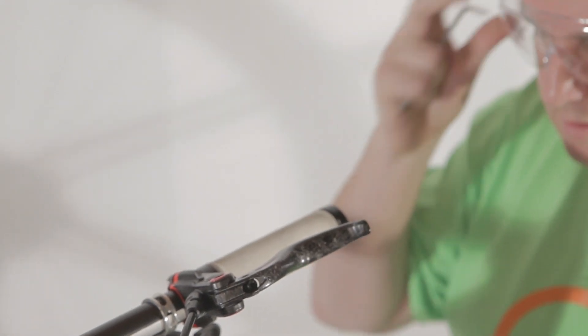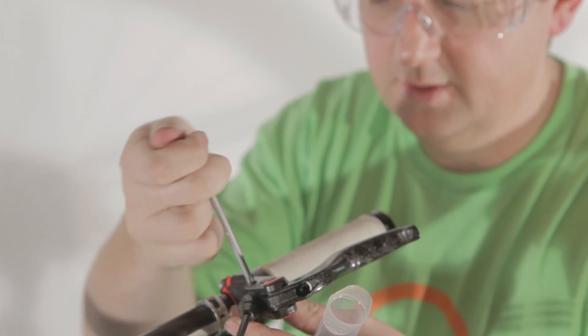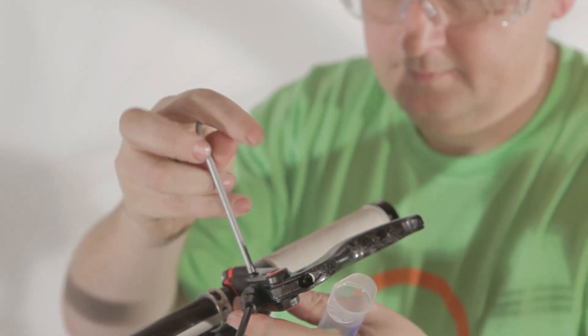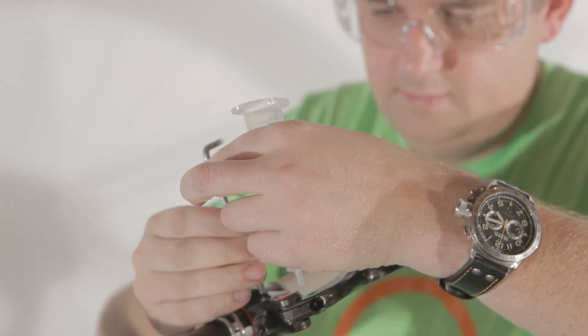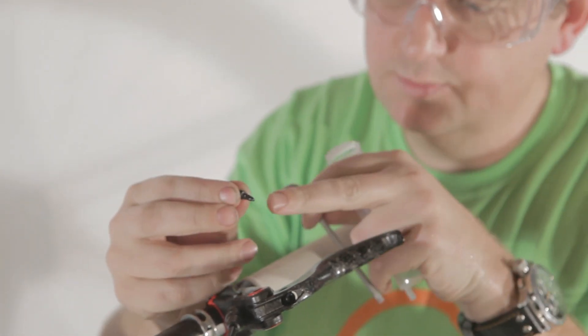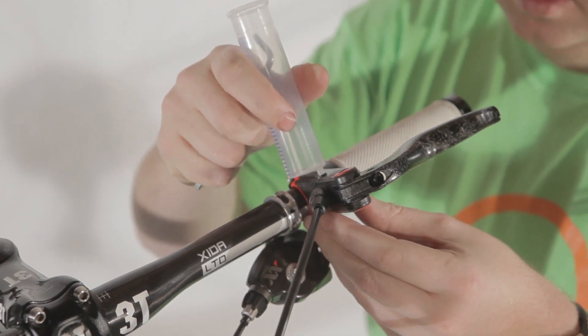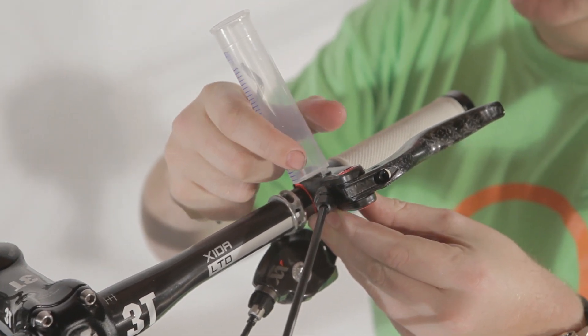Don't worry, it's mineral oil, so it doesn't harm you. Anyway, we open the bleed port on top of the lever. Make sure you don't lose this one. It has a small o-ring that actually closes off the whole system. Once that is removed, we put a syringe without the plunger into the bleed port. You push it down like that.